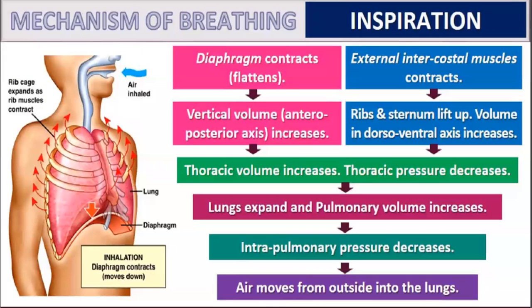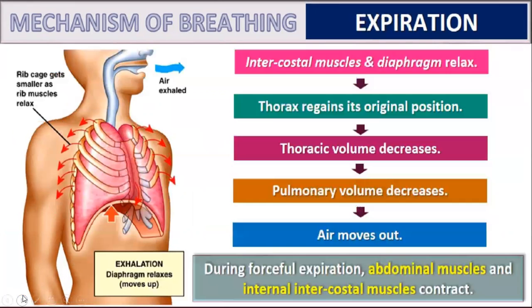To summarize inhalation: the diaphragm contracts and gets flattened, and the external intercostal muscles also contract. The overall volume of the thoracic cavity increases, so pressure decreases. Since the pressure inside is now lower than outside, gases diffuse from outside to inside — and that process is known as inhalation.